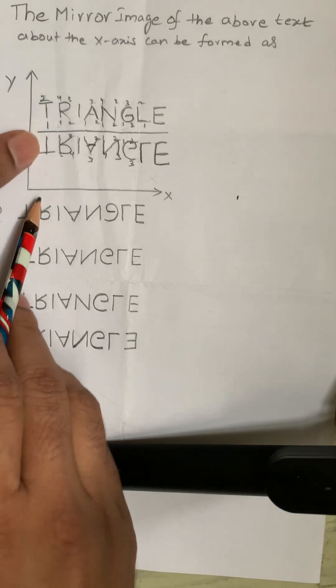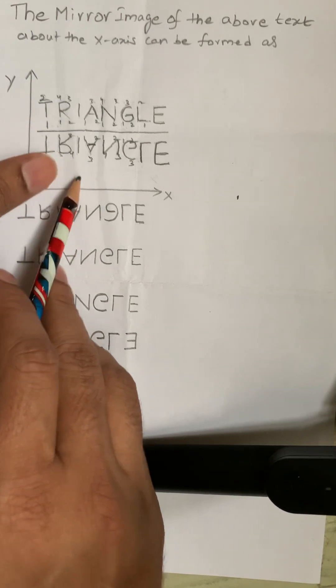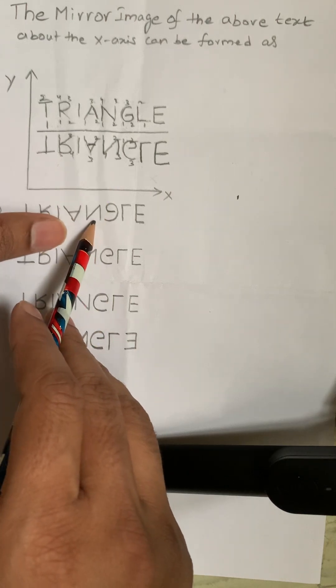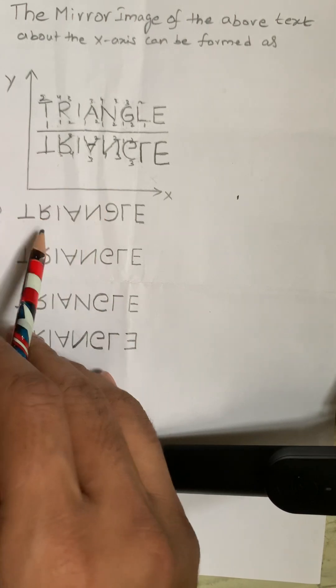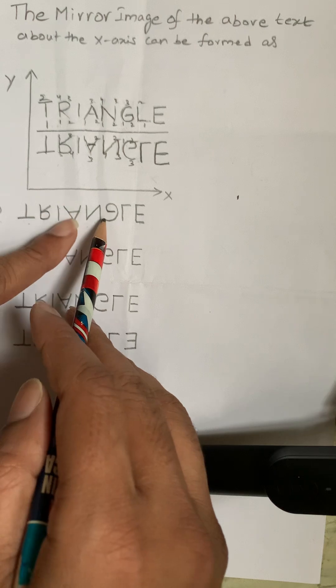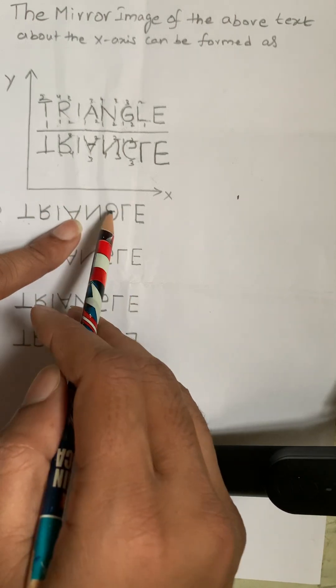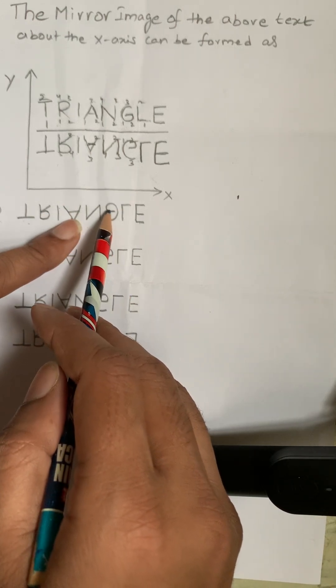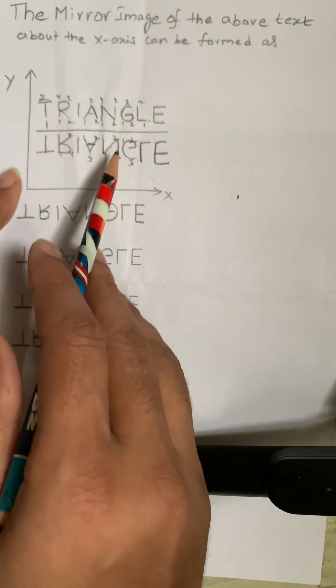T, R, I, A, N is also same up to N. It is option 1. And when it comes to G, here it flips in the Y direction, I mean in this direction.